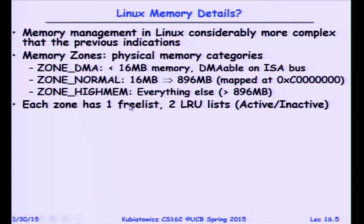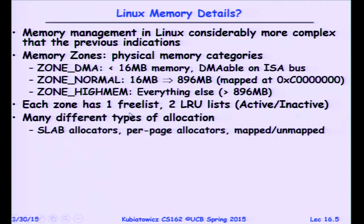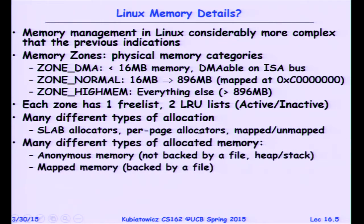Every zone has one free list and two LRU lists — think of it as one free list, two clock lists, with many different allocators attached: slab allocators, per-page allocators, many different types of memory allocation.